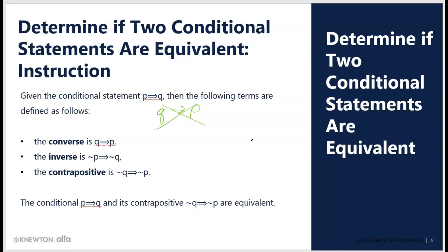You may have seen this in a geometry class. What if I just negate both of them? 'If it is not Tom's truck, then it is not red.' That again would mean Tom must own every red truck, so that makes no sense. The order is the same but both sides are negated — this is called the inverse.